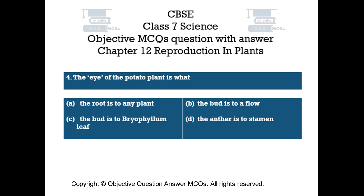Question number 4. The eye of the potato plant is what? Option A: The root is to any plant. Option B: The bud is to a flower. Option C: The bud is to bryophyllum leaf. Option D: The anther is to stamen.